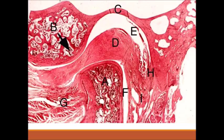This is a decalcified section of the temporomandibular joint. A refers to the head of the mandible, D for the disc, C for the glenoid fossa, B for the articular eminence, E the upper synovial cavity, F the lower synovial cavity, H the upper zone, I the lower zone, and G the lateral pterygoid muscle.